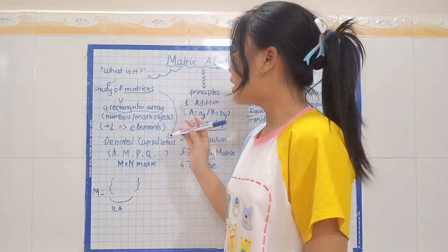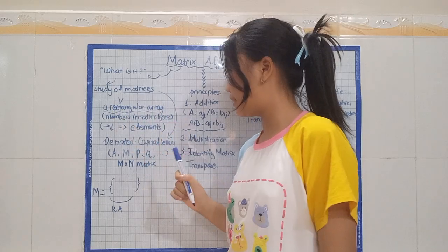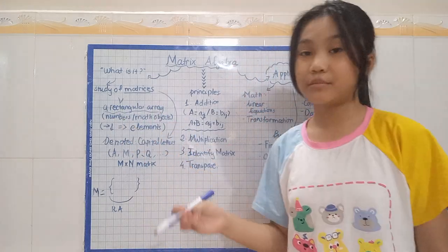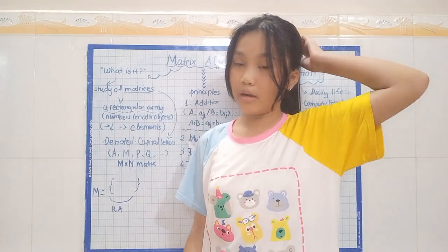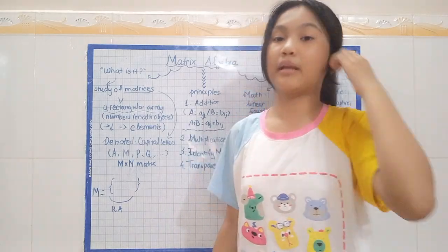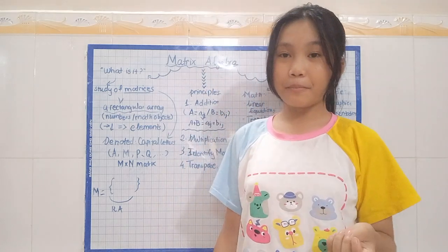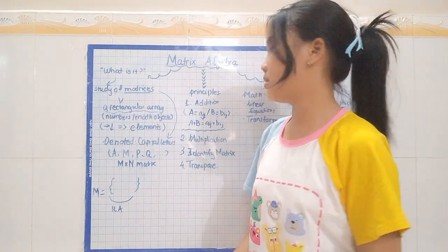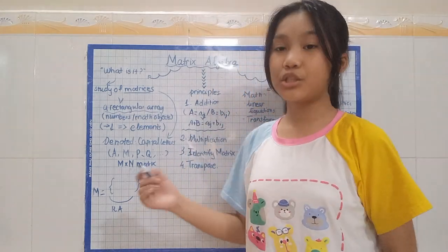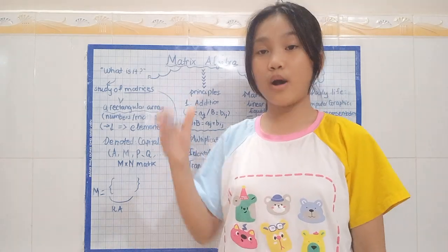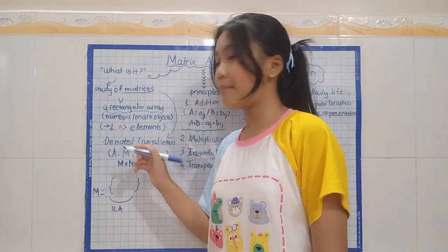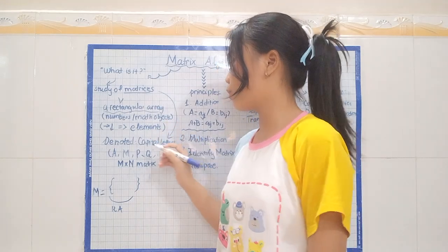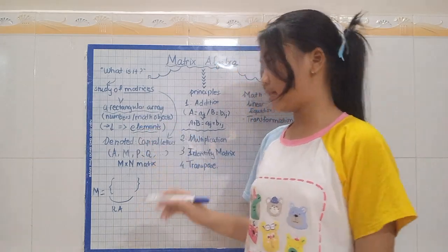Inside these rectangular arrays are numbers and mathematical objects such as numbers, calculus differences, arithmetic problems, and it's usually shown in rows and columns. Each number is called an element.